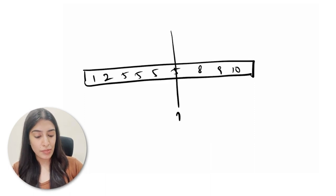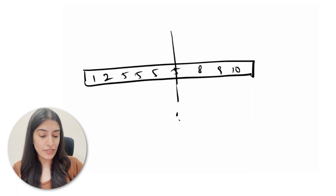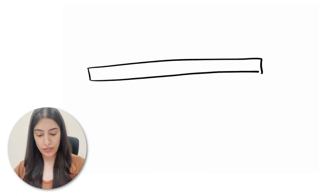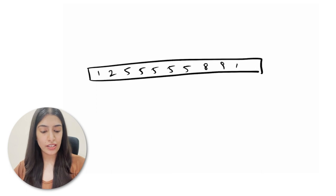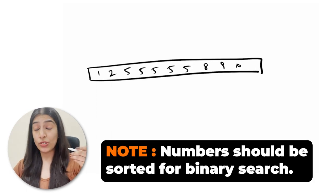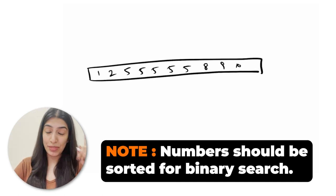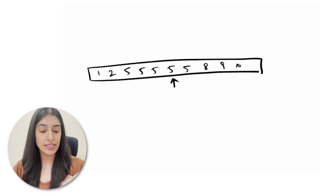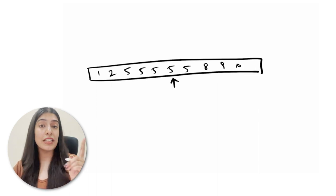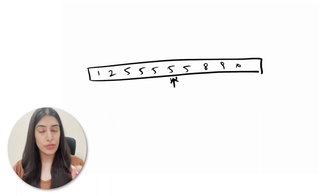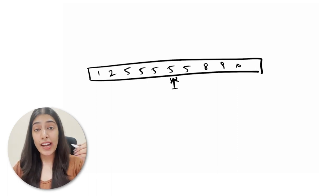Suppose 5 itself is the middle element — we can't be sure whether this is the first, last, or a middle occurrence. Say our array is 1 2 5 5 5 5 5 5 8 9 10. The numbers should be sorted to apply binary search — get your basics right. Now suppose our middle element is 5. We found it, but we don't know whether this is the first occurrence, last occurrence, or somewhere in the middle.